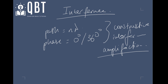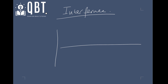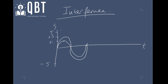Let me just draw this for you in a diagram to help you visualize what I'm talking about. So if we have a displacement-time graph for a wave, and let's say this is plus five and this is minus five, and we have one wave like this, and then we have another wave like this. Now let's say they're completely in phase, and this one comes to plus one, this one to plus three, this one to minus two, and this one to minus three.